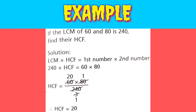In the second step, put the value of LCM, which is 240, and 60 for the first number and 80 for the second number. In the third step, 240 is on the left-hand side, and 60 and 80 will be divided by 240 on the right-hand side. After cancellation, the HCF is 20.